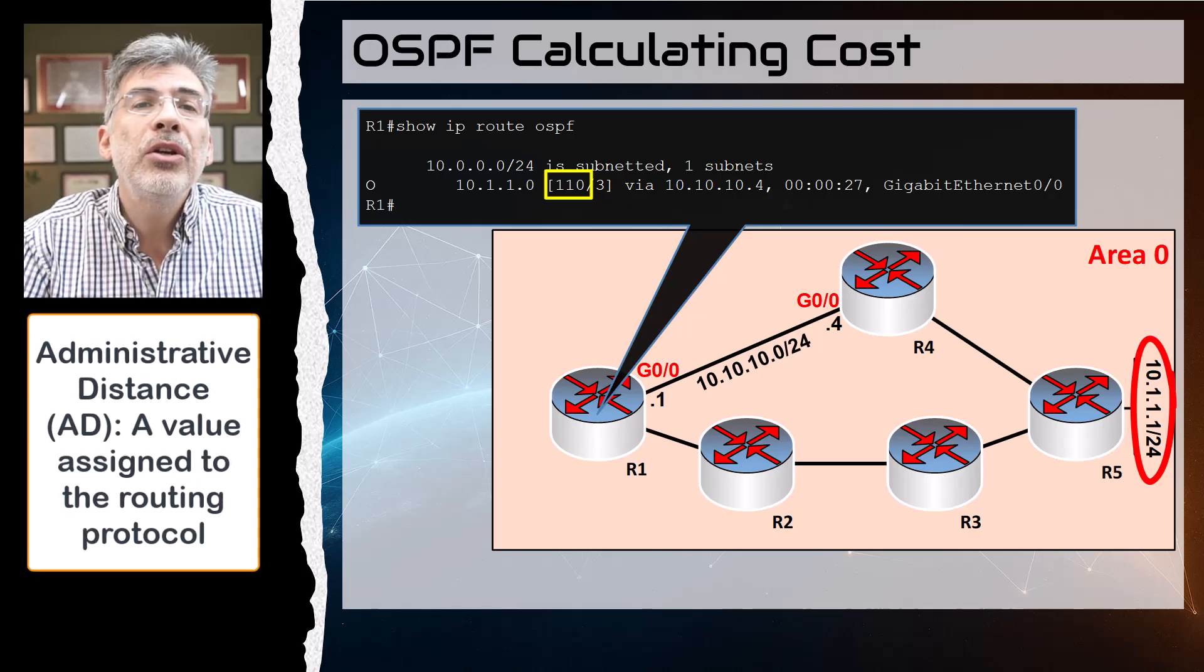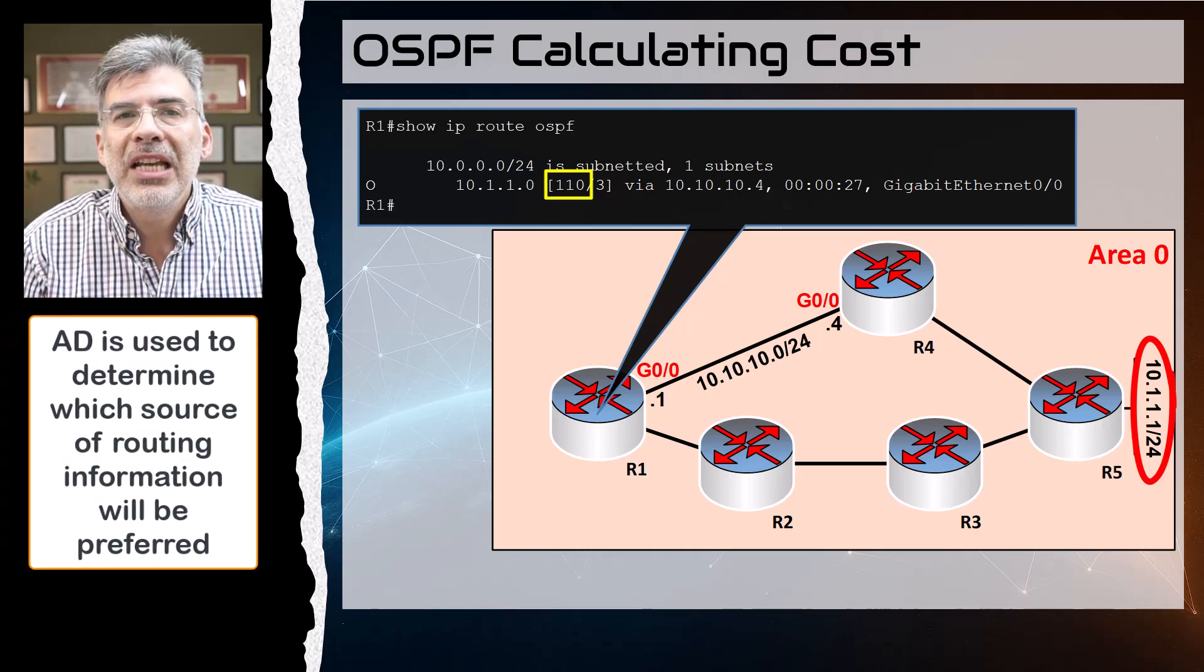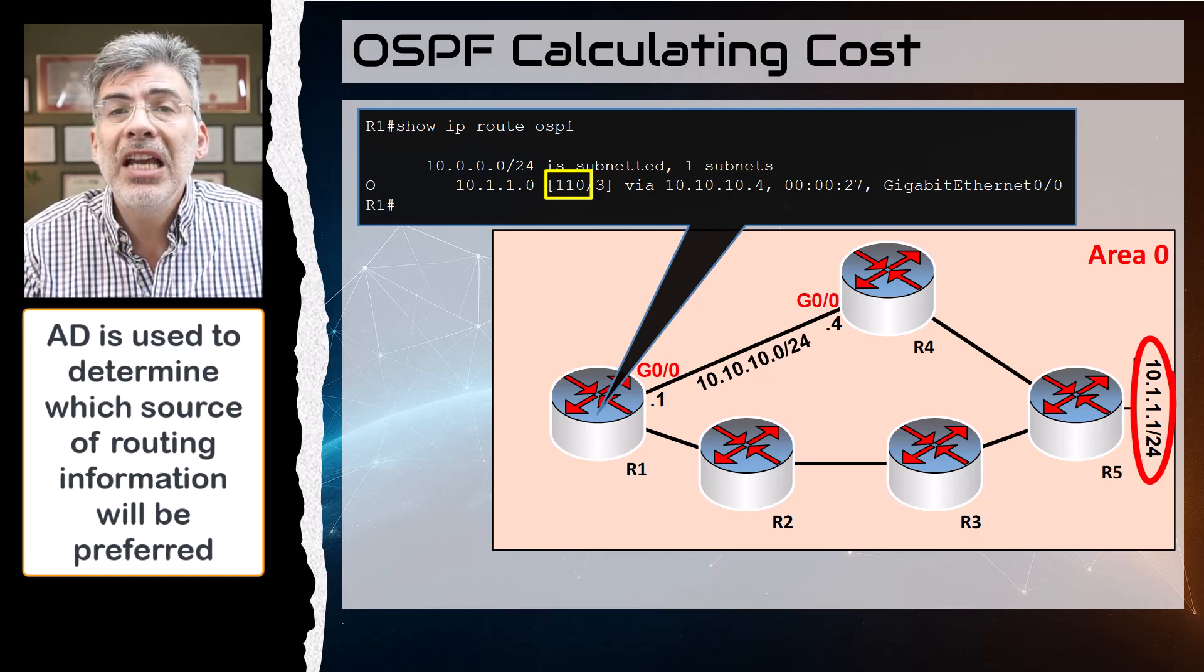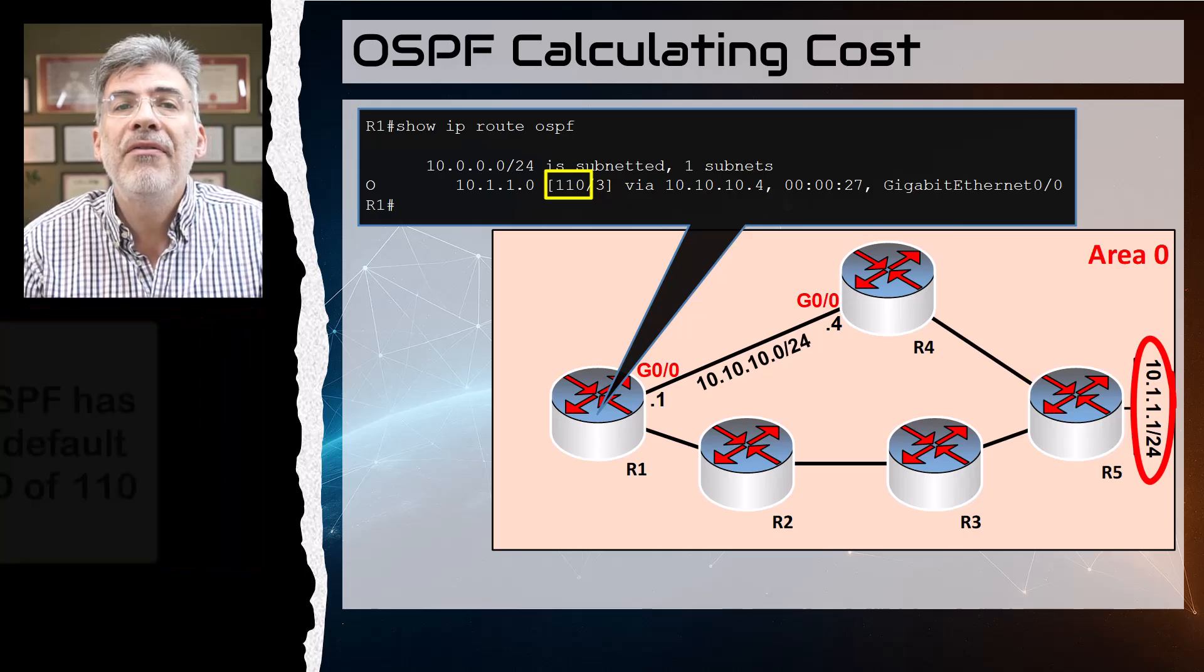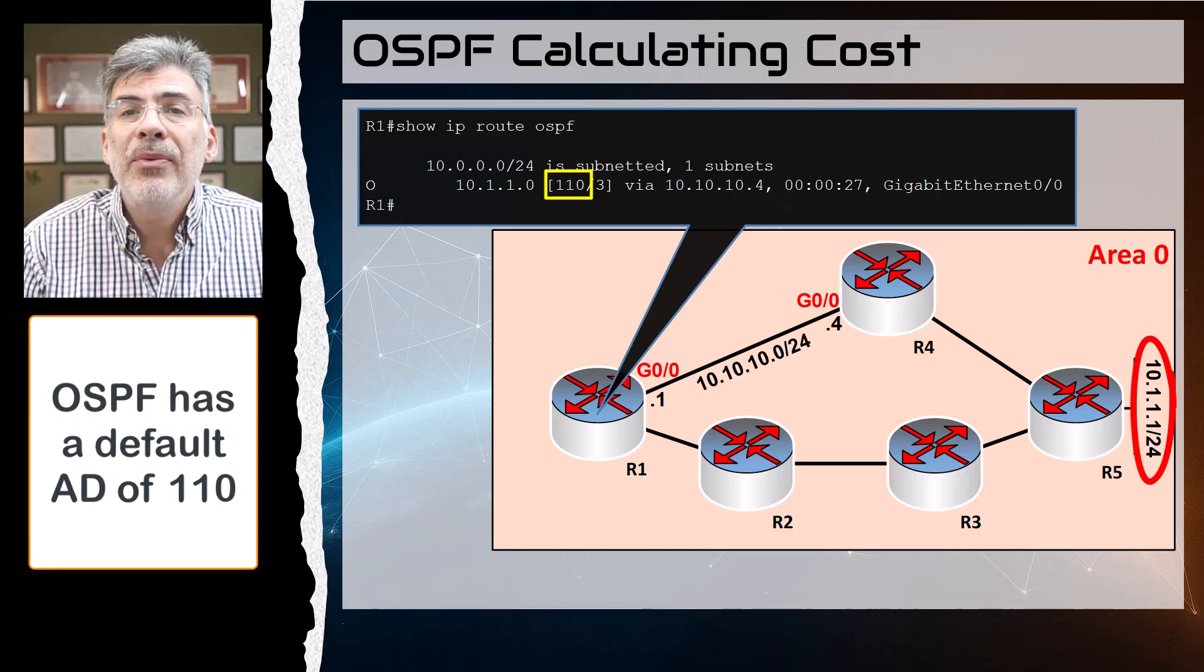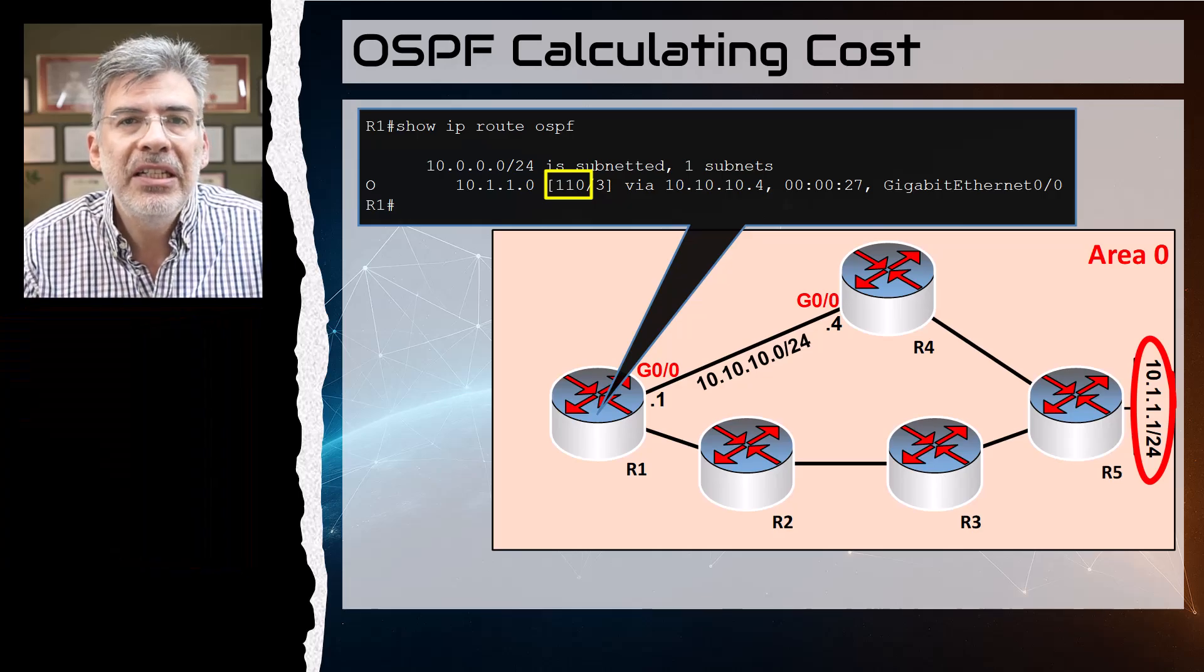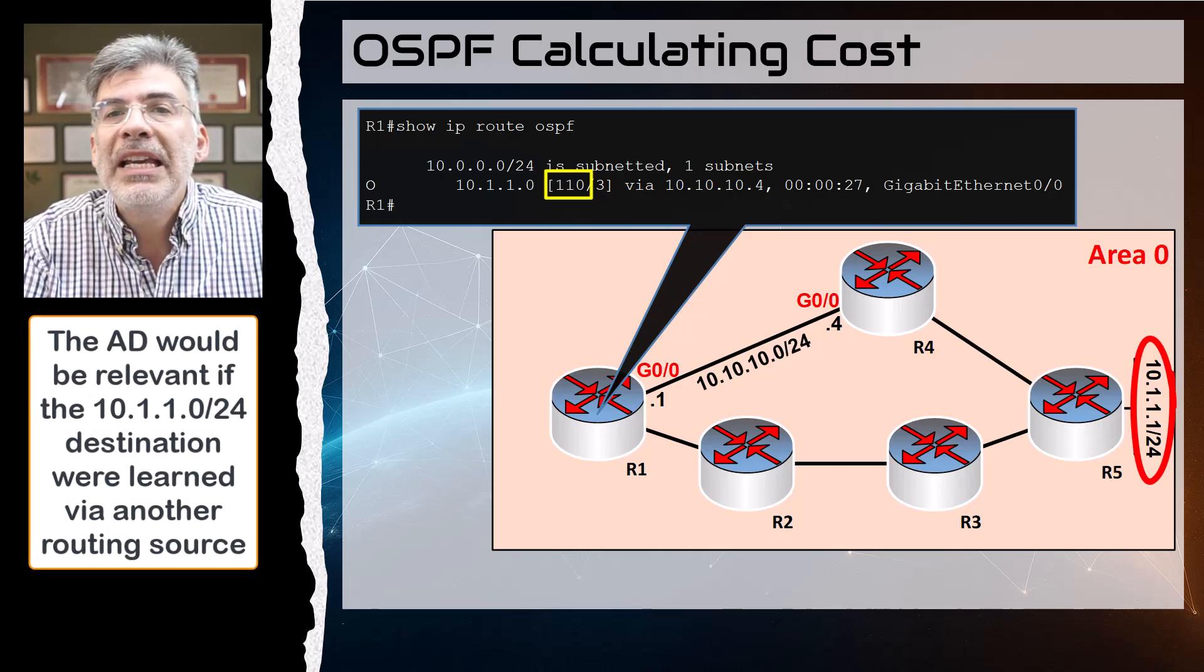The first is the administrative distance. This is a value assigned to the routing protocol itself and it's used to determine which routing source will enter the routing table. OSPF has a default administrative distance value of 110, and that's why we see it here.